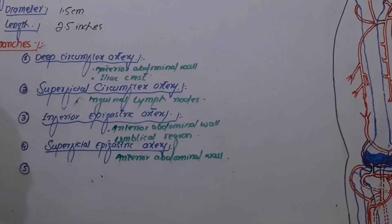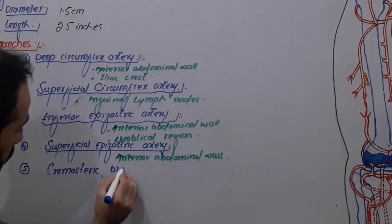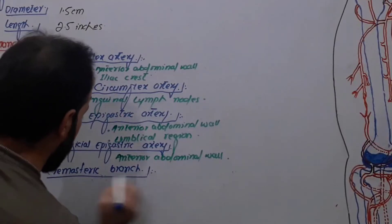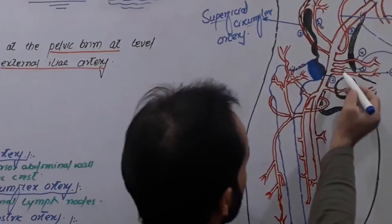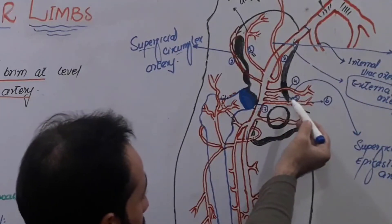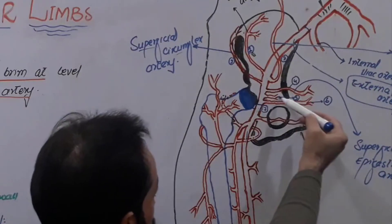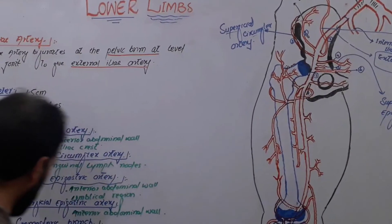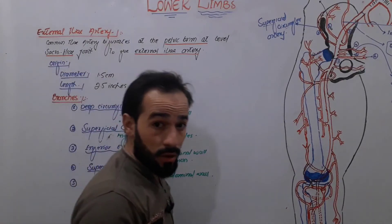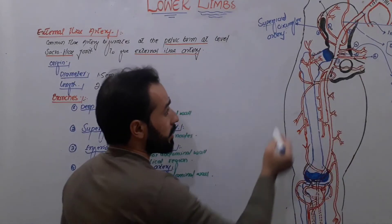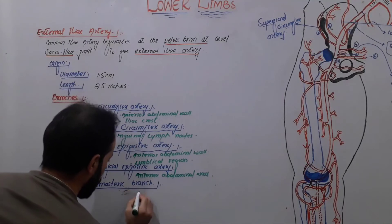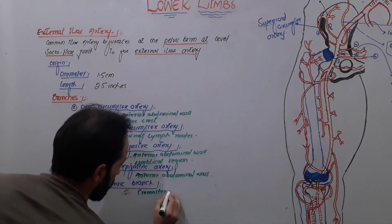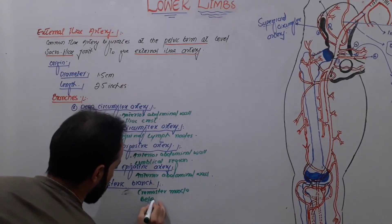The fifth branch is called the cremasteric artery. This cremasteric branch is present only in males, not in females. It goes forward to the cremaster muscle, which is present below the spermatic cord. This artery supplies blood to the cremaster muscle.